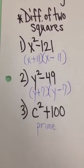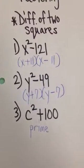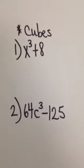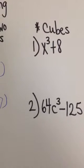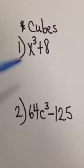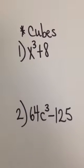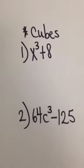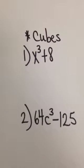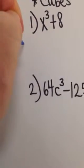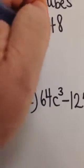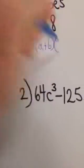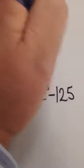Another special factoring technique involves cubes. Look in your book or online in MyMathLab for the various formulas you will need to factor a sum or a difference of two cubes. For number one we have what's called the sum of two cubes. The formula is: a cubed plus b cubed equals a plus b, times a squared minus a times b plus b squared.